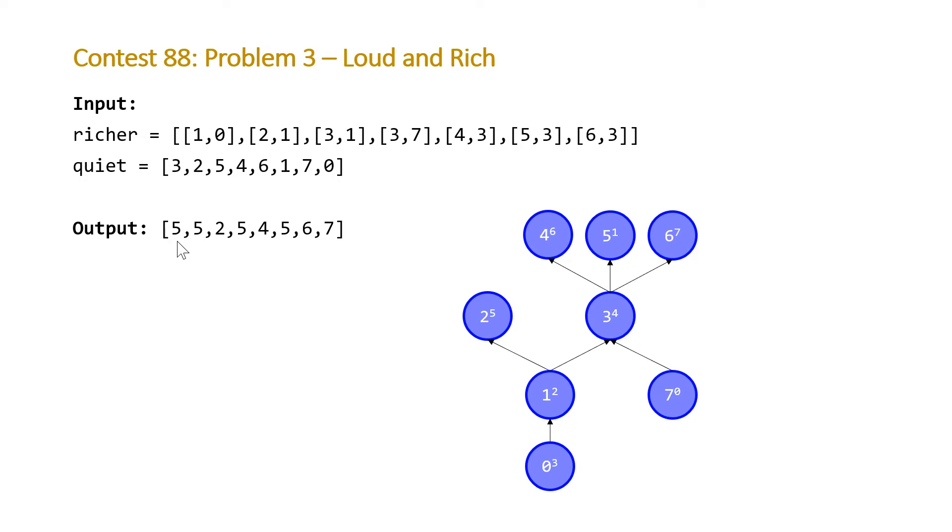Now we have a representation of our input, and we simply need to solve what the question's asking. Going back to our answer vector that we're going to return, when we are looking at index zero, it's asking which of the individuals that have more money than individual zero is the loudest. So if we look at every single individual that we know is richer than zero—that'll be zero, one, two, three, four, five, and six—out of all these individuals, we can tell that the loudest individual is individual five, because they have a quietness level of one. And the lower the quietness level, the louder the individual.